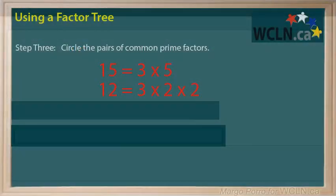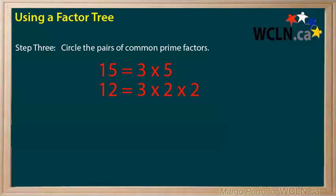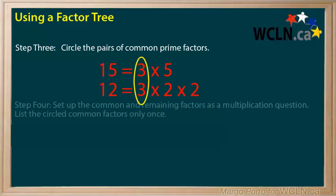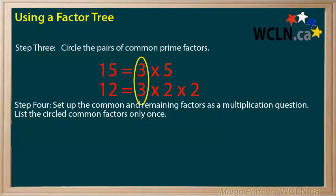Step 3 is to circle the pairs of common prime factors. In this example, both 15 and 12 have a 3 in common. Step 4 is to set up the common and remaining factors as a multiplication question. List the circled common factors only once. Since 3 is common, it is listed once.